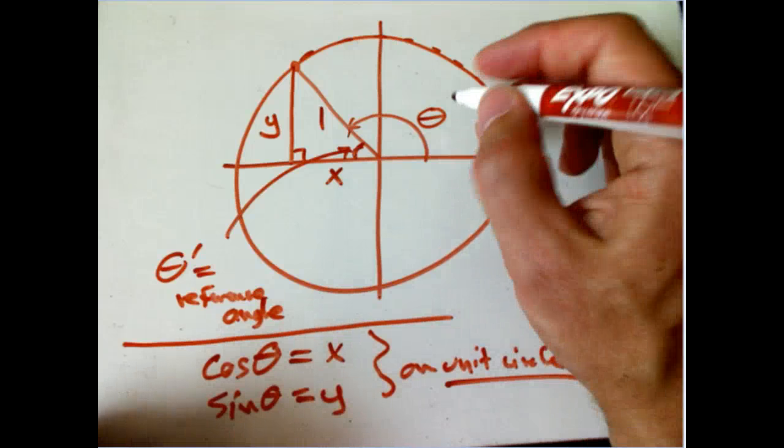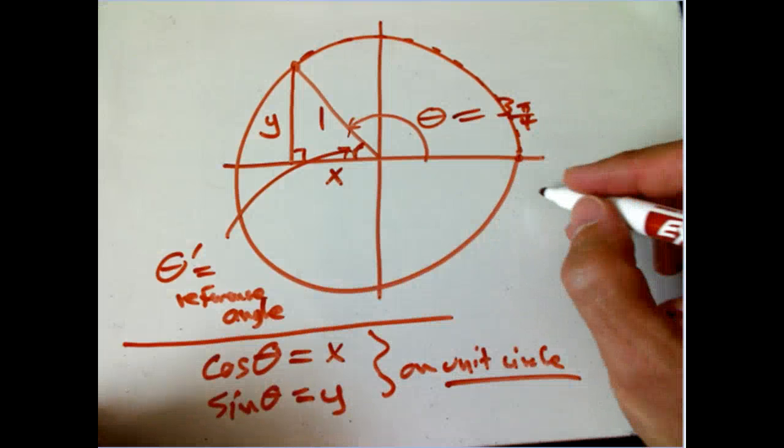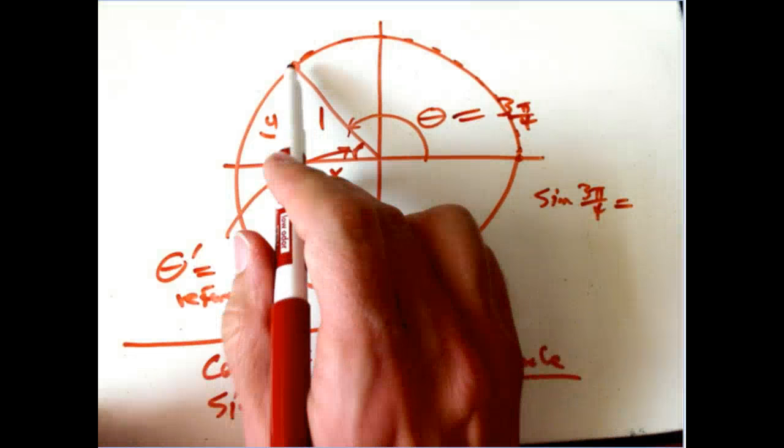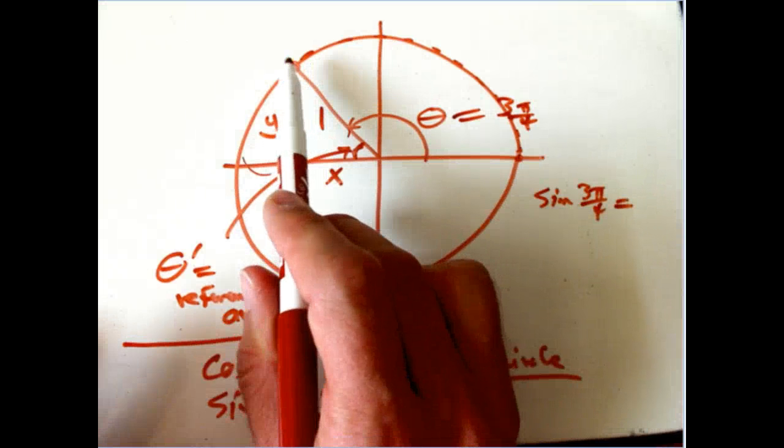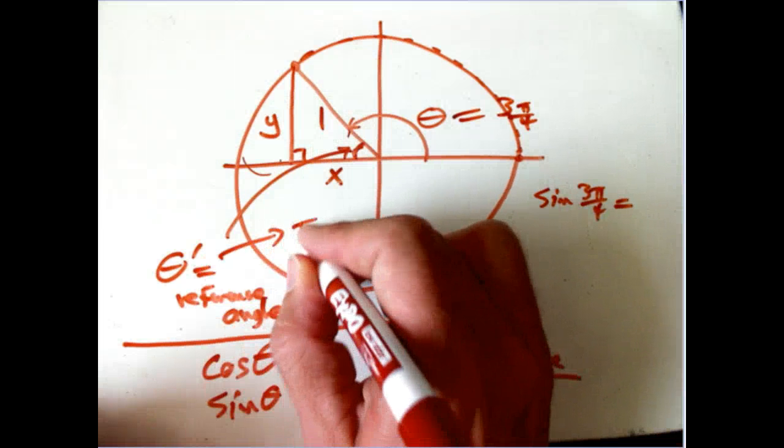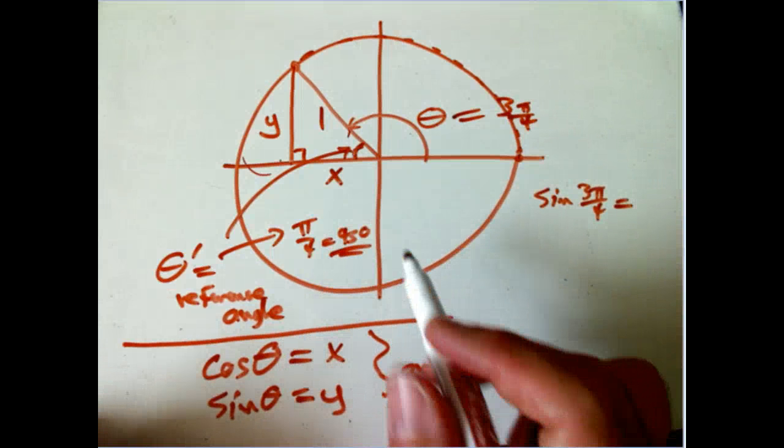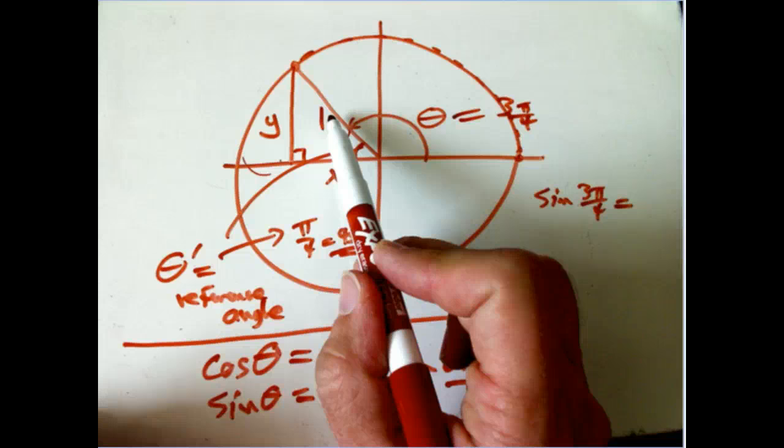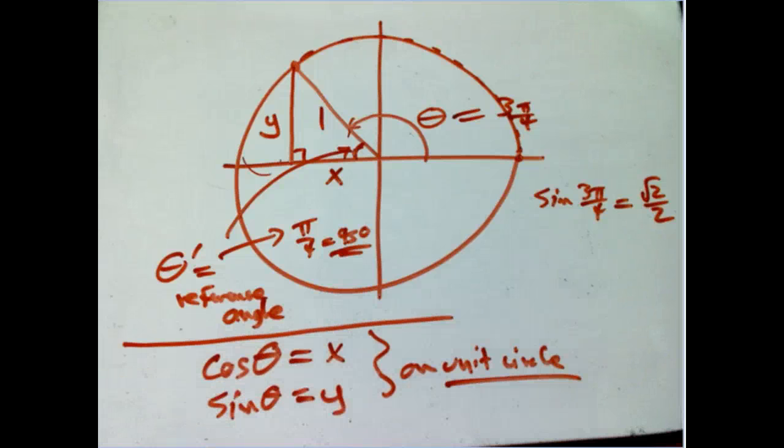I've got a separate video just about reference angle calculations. For example, suppose this was 3 pi over 4. And I want to get sine of 3 pi over 4. That's that y, and it really is exactly that y with a positive, because we're still in the second quadrant. In this case, that's going to be pi over 4, or if it's more familiar, 45 degrees. Because I've gone almost all the way to pi, and then I come back by pi over 4.